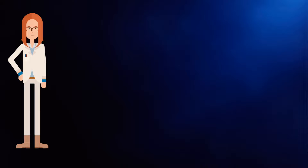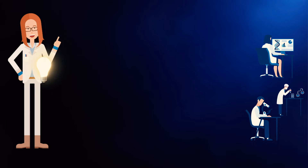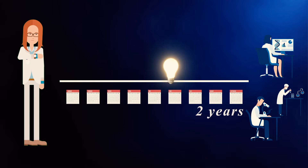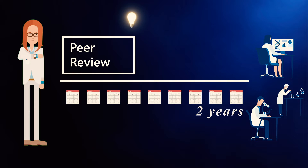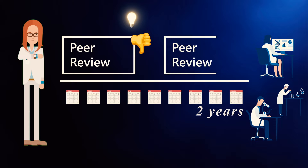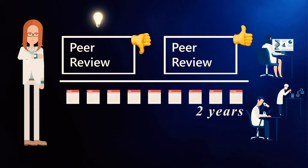Today we're going to be looking at redesigning peer review. When a scientist discovers new knowledge that could help cure a disease, it might take two years before that knowledge actually gets published and can start helping other scientists, because it has to be peer-reviewed by one journal, usually rejected by that first journal, and then peer-reviewed again by a second journal, and then accepted. For most of that two years, that new knowledge that can help people is just sitting on someone's desk.